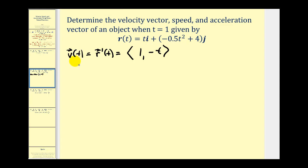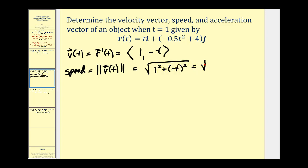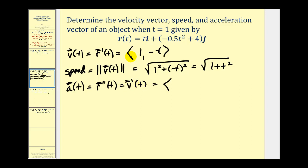To determine the speed, we find the magnitude: the square root of one squared plus negative t squared, which gives us the square root of one plus t squared. To find the acceleration vector-valued function, we take either the second derivative of the position function or the derivative of the velocity function. Taking the derivative of each component of the velocity function: the derivative of one is zero, and the derivative of negative t is negative one.